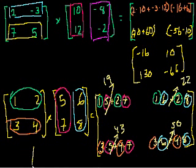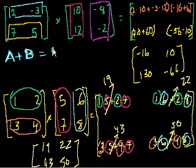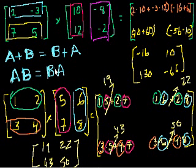So the product matrix is 19, 22, 43, and 50. Now let me ask you a question. When we did matrix addition, we learned that if I had two matrices, it didn't matter what order we added them in — A plus B is the same thing as B plus A. So now let me ask: is multiplying two matrices commutative? Is A times B the same thing as B times A? Does the order of matrix multiplication matter? I'll tell you right now: it actually matters a tremendous amount. And there are certain matrices that you can multiply in one direction that you can't in the other.